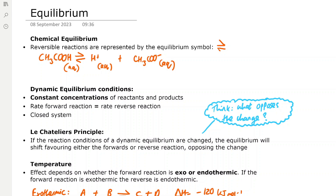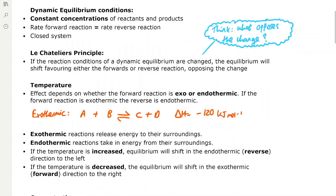In chemical equilibriums, reversible reactions are represented by the equilibrium symbol. In this equilibrium, ethanoic acid is dissociating to H+ and CH3COO- ethanoate ions. In a dynamic equilibrium, we have certain conditions which are maintained: constant concentrations of reactants and products, the rate of the forward reaction is equal to the rate of the reverse reaction, and it's in a closed system, meaning nothing is added or removed from the reaction mixture.